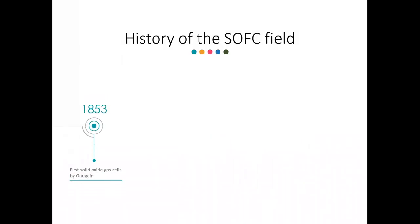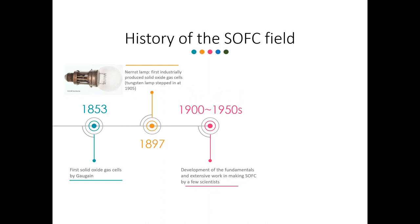Let's switch gears to learn some history of the solid oxide fuel cell. In 1853, the first solid oxide gas cells were invented by Goggin. In 1897, the first industrially produced solid oxide gas cells were equipped in a lamp to be the nursed lamp. In the first half of 20th century, several theorists and experimentalists were working on solid oxide fuel cell.